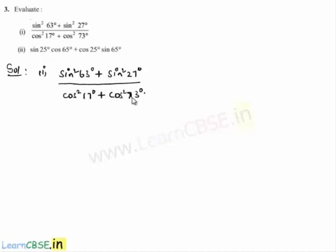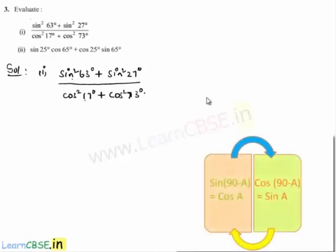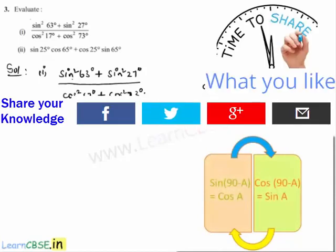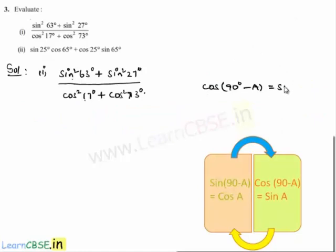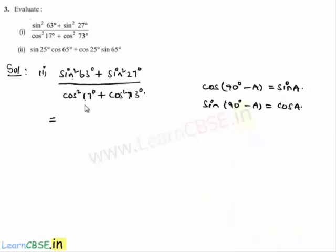In order to convert the given numerator and denominator into known identities, we use: cos(90 - a) = sin a and sin(90 - a) = cos a. Using this, let us have one trigonometric ratio in the first term in terms of cos and the other in terms of sin, and similarly in the denominator, so that they may form an identity.